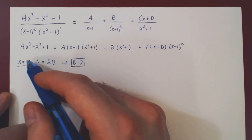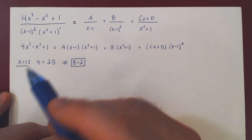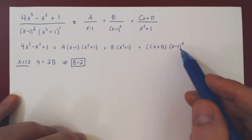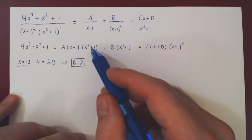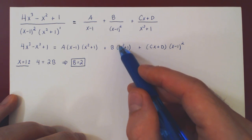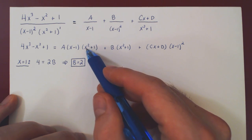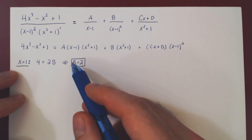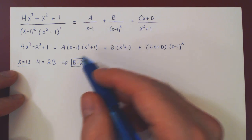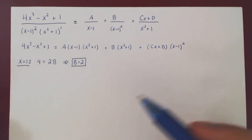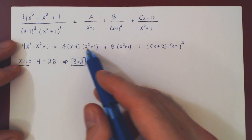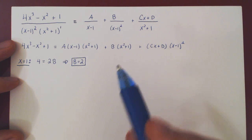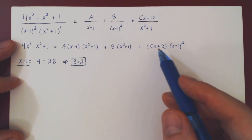Are there any other values of x that eliminate all coefficients but one? The answer is no. We've already used x minus 1; the only other factor is x squared plus 1. As this is an irreducible quadratic, it cannot be made equal to 0 by choosing a real value of x. So this method of choosing a strategic x value has given us all it could — just the value of b. We must fall back on rewriting the right-hand side into its canonical form and equating coefficients on both sides to solve for the other three coefficients.